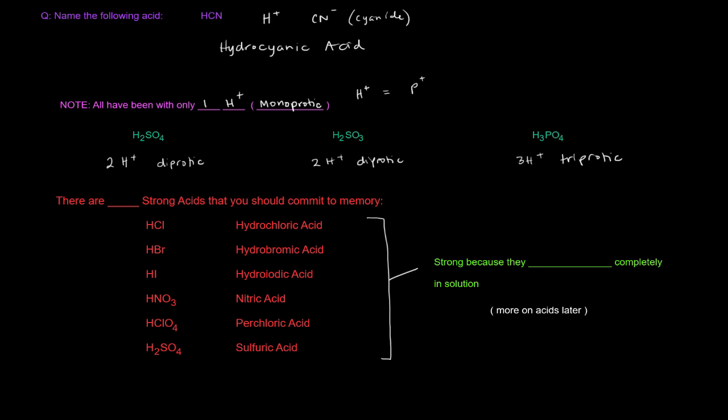So what I wanted to do is mention something that's pretty important. It's the idea that there are six strong acids that you should commit to memory. And here they are. HCl, HBr, HI, HNO3, HClO4, H2SO4. HCl is hydrochloric acid. HBr is hydrobromic acid. HI is hydroiodic acid. HNO3 is nitric acid. HClO4 is perchloric acid. H2SO4 is sulfuric acid. You should memorize all of those, the formulas, their names, and the fact that they are one of these six strong acids.